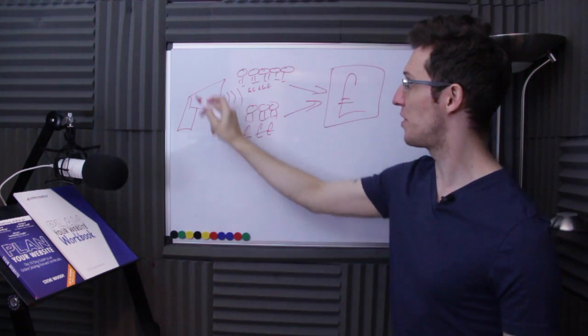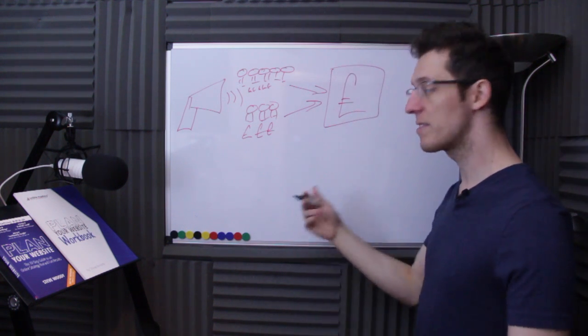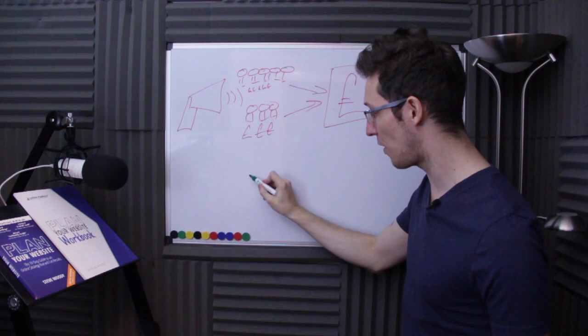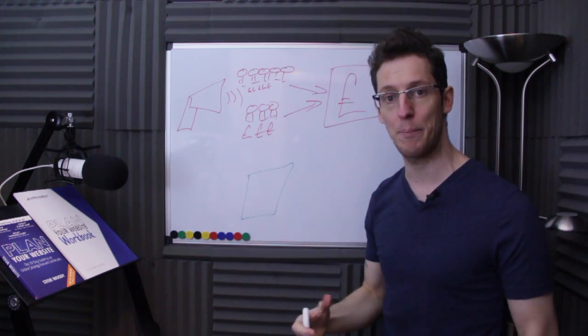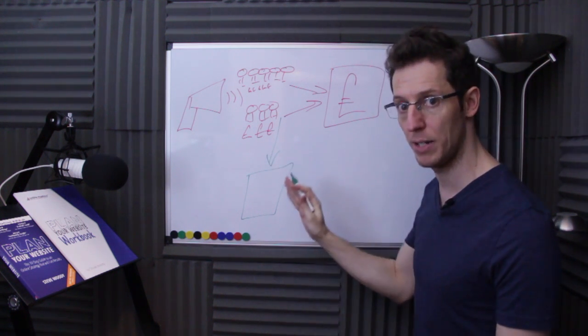Now, for that to happen, for this whole promote section to happen, you need to have something you can send them to. You can't just promote anything, you have to have ideally a website or an app or something and somewhere where you can send these people where they can purchase and they can pay you.